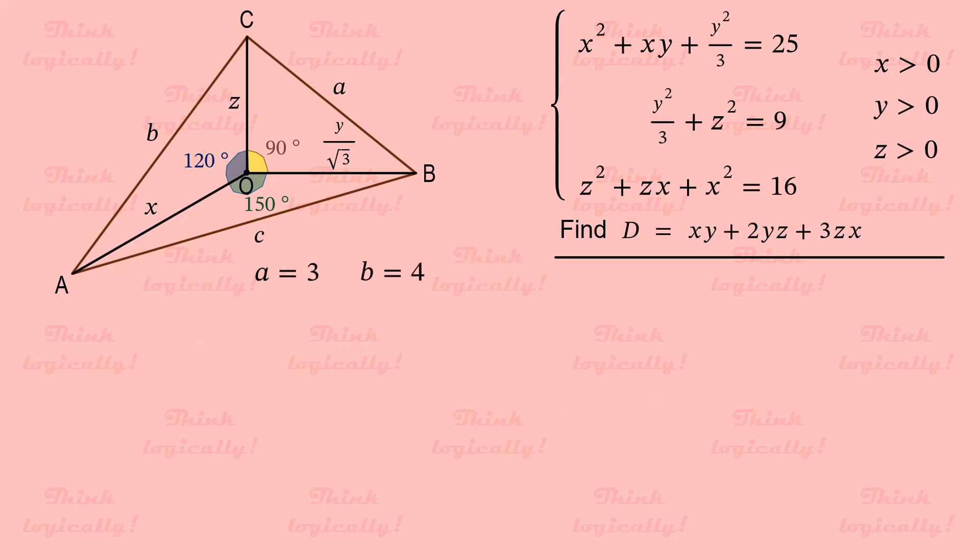You have certainly guessed what we are going to get for the value of C. But we must observe the formality. So we consider triangle AOB and again use the cosine rule. C squared equals x squared plus y over square root of 3 squared minus 2 times x times y over square root of 3 times cosine of 150 degrees. The complementing angle for 150 degrees is 30 degrees. So we simplify the expression.